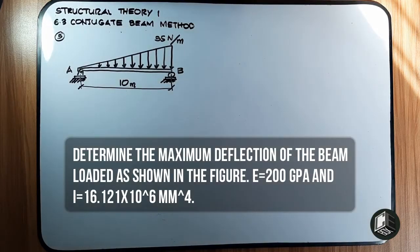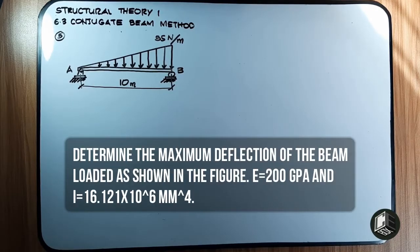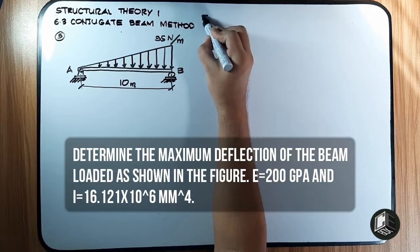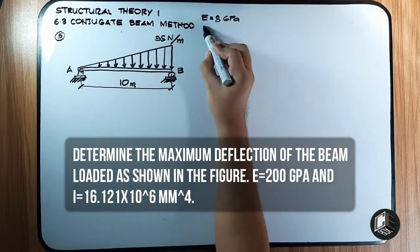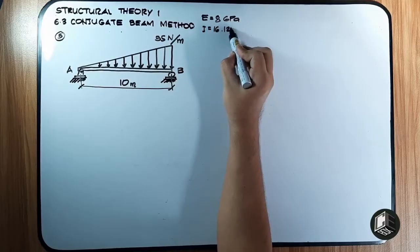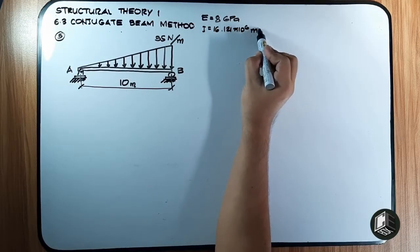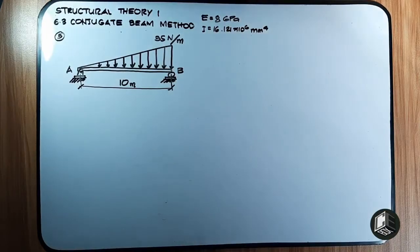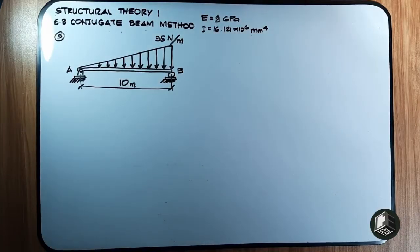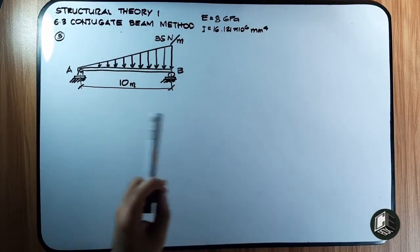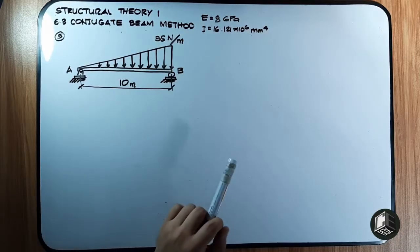This is the last example for the conjugate beam method to determine the maximum deflection of the beam loaded as shown. E is equal to 8 gigapascals and I is 16.121 times 10 raised to 6 millimeters to the fourth. This is the same as Example Number 5 in double integration, so we will compare the solution using double integration versus the conjugate beam method.